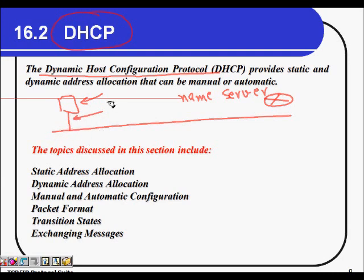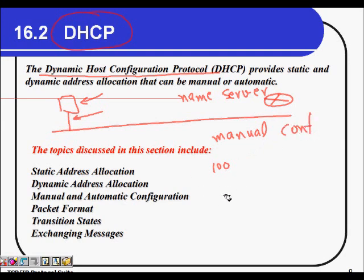DHCP is an automatic process. In a manual configuration scenario, if there are 100 machines in a lab and an administrator manually assigns IP addresses, there can be conflicts — for example, if the same address like 172.17.6.7 is given to two or more machines, none of them will work. So it's important to have an automatic process where a computer handles all this.